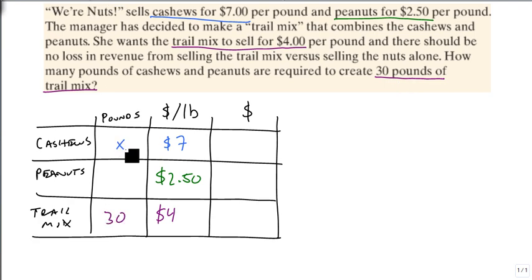What we don't know is how many pounds of cashews and how many pounds of peanuts. Well, we multiply across and we get 7x. If we buy x pounds at $7 a pound, we'll spend 7x dollars. And $2.50 times y for the peanuts. And that has got to come out to $120 total, 30 times 4, in order to not lose any money.